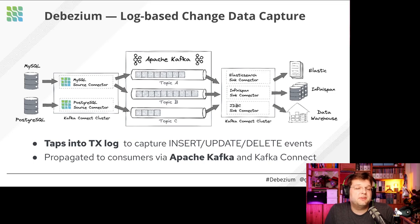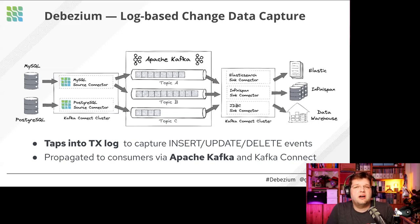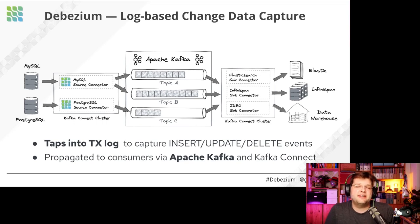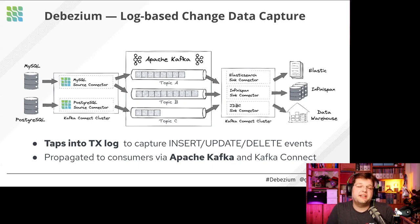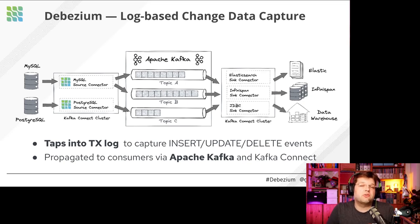Kafka also lets you keep data as long as disk space allows, meaning you can enable new use cases down the road that you hadn't planned for when setting up the source connector. Then there's Kafka Connect — a runtime and framework for implementing such connectors. Debezium is essentially a set of Kafka Connect source connectors that take data out of a database and put it into Kafka, while sink connectors take data out of Kafka and write it to an external sink system. This is all set up by configuration, so Debezium users don't have to be programmers — data analysts can set up a pipeline just by configuring it.